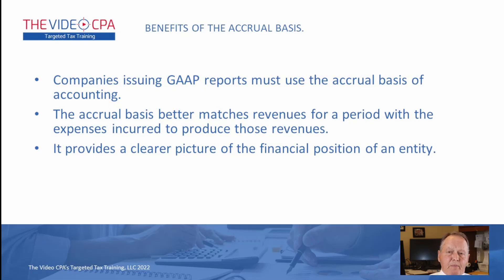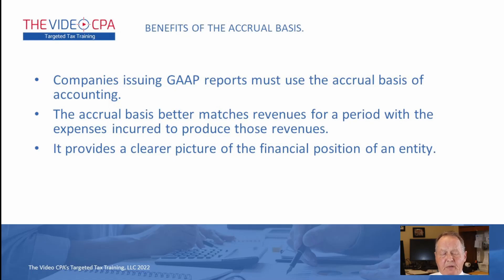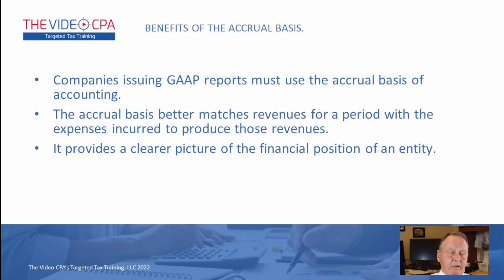The accrual method also provides a clearer picture of the financial position of an entity — essentially the balance sheet. Under the cash method, you may not have receivables or payables on your balance sheet, but those things are out there as real liabilities. A banker, for example, would want to know about those before loaning money. The accrual method shows accounts receivable, accounts payable, notes payable — all of those things — giving a much more complete picture of a company's financial position.